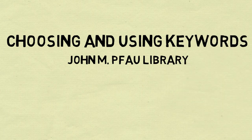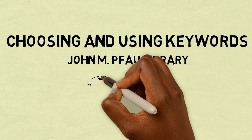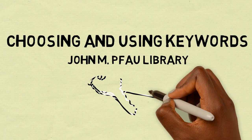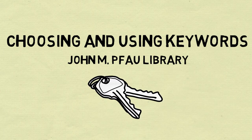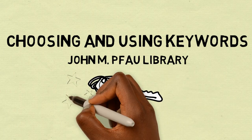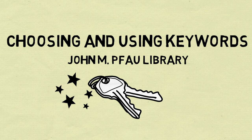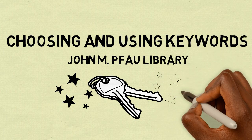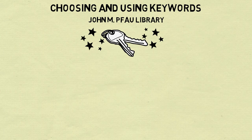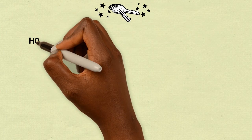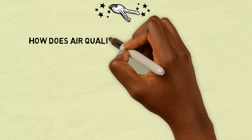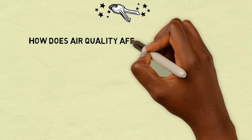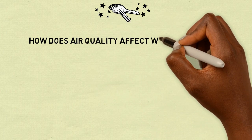In this video, we'll cover how to develop keywords that you can use to find sources in the library's databases. The first step is to write down your topic or research question. Here we have: How does air quality affect women's health?